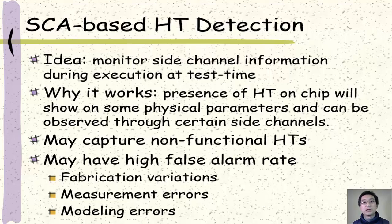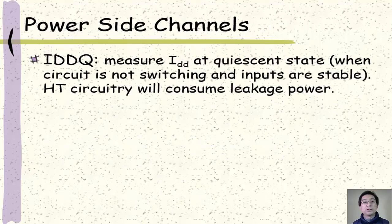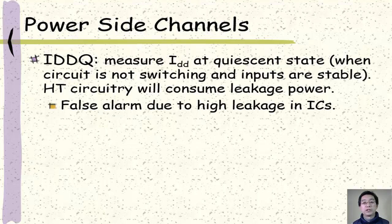Now let's see a couple of popular side channels. First is the power side channel. We can measure the supply current at the quiescent state when the circuit is not switching and the inputs are not changing. In this case, if there is a hardware trojan, the hardware trojan circuitry will consume additional leakage power and that can be caught. However, this may also have a high false alarm rate because nowadays chips have very high leakage current.